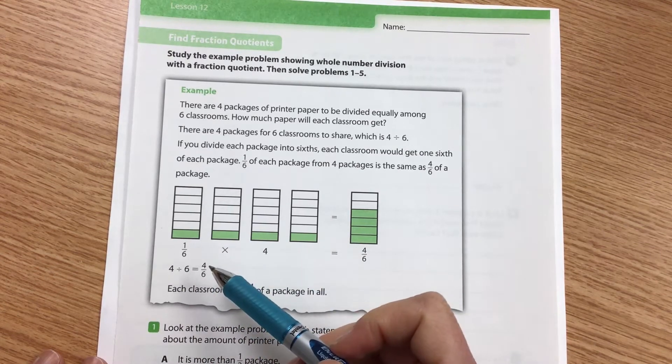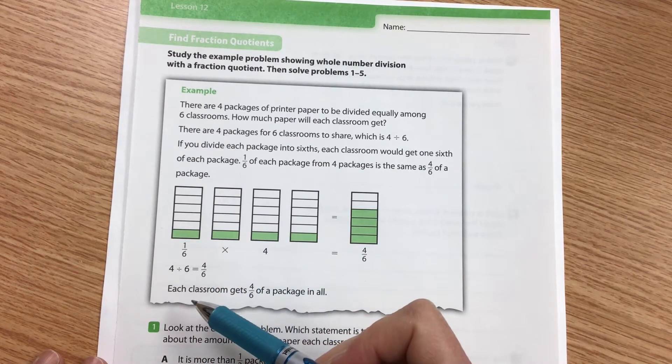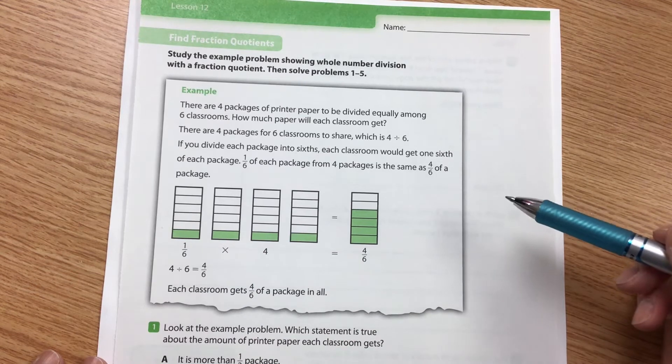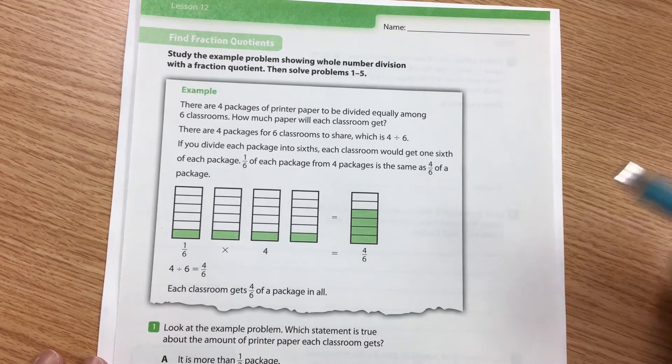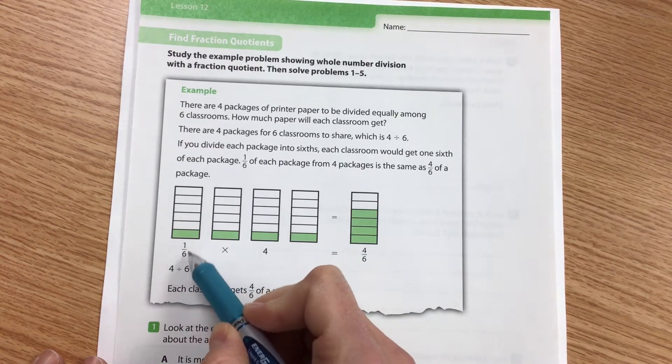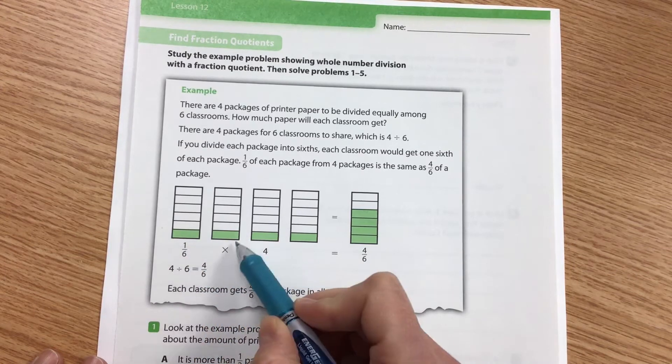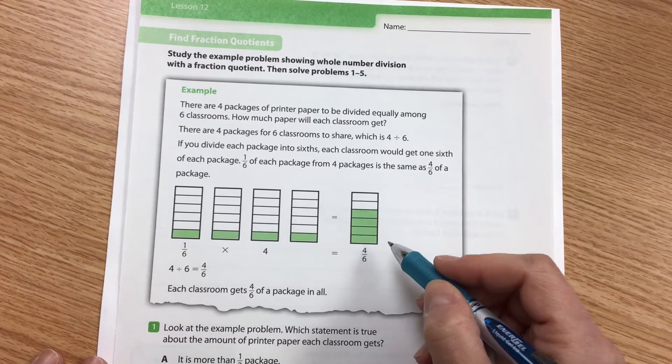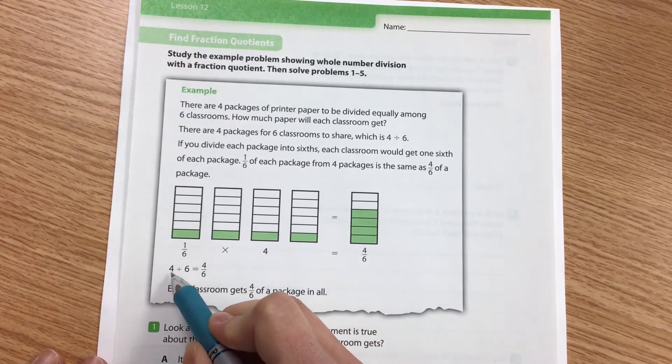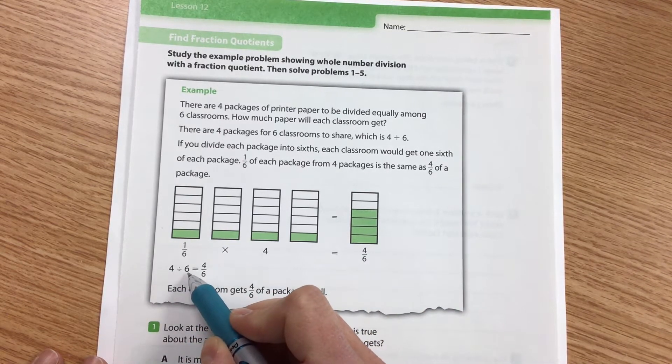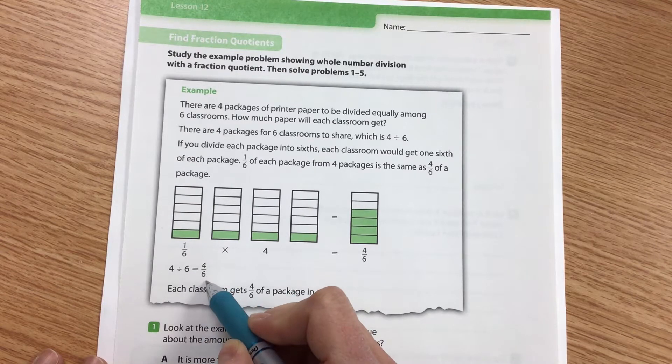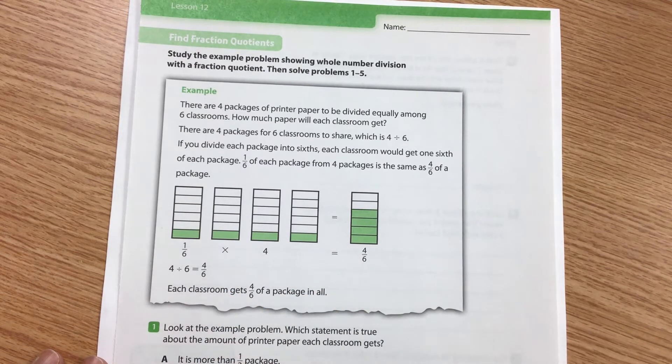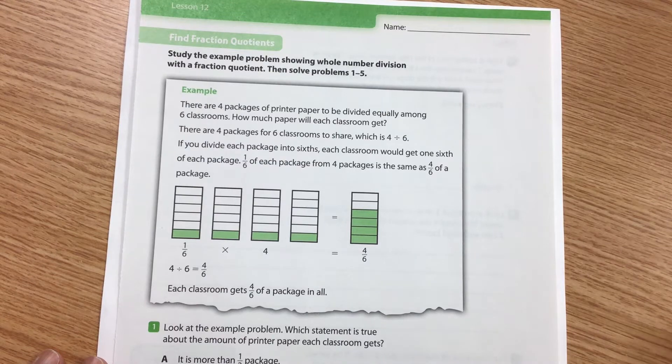One-sixth of each package from four packages is the same as four-sixths of a package. So they've done that two ways. So we have our one-sixth times four packages is four-sixths. Or they've just taken four and they've divided it by six classrooms to get four-sixths. Each classroom gets four-sixths of a package in all.